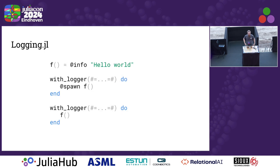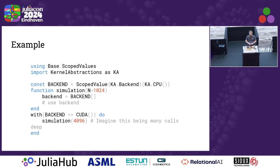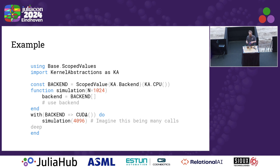So how did `withlogger` look? We have a function f that accesses the logging state, and `withlogger` would spawn that function. I could concurrently change to a different logger. Now with scoped values in 1.11, I have a `const backend`, which is basically a global constant initialized to be a scope value with a default value. I can access this within my simulation argument. And I use `with` to say I want this global value to now point to CUDA, switching my computational backend to CUDA. Somewhere deep in the differential equations simulation stack, somebody calls this function, looks at the global constant scope value, and gets: I'm supposed to be running on the CUDA backend. Very simple.